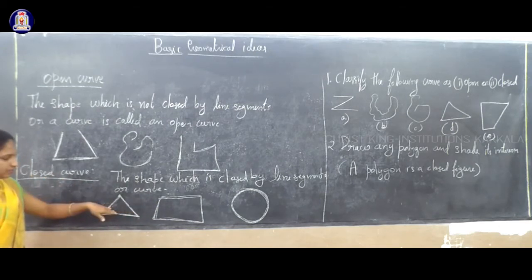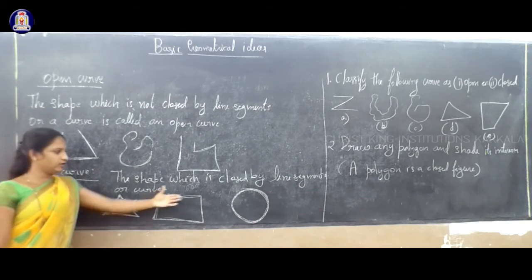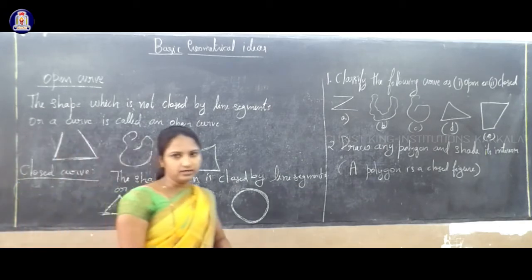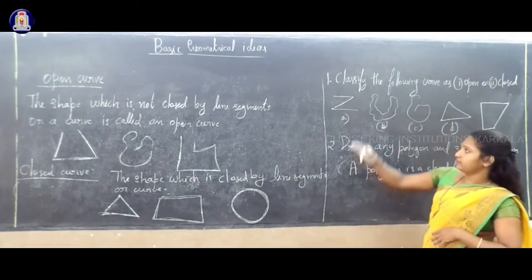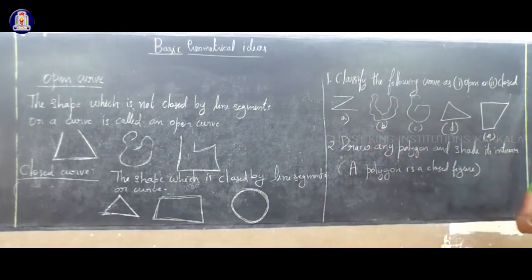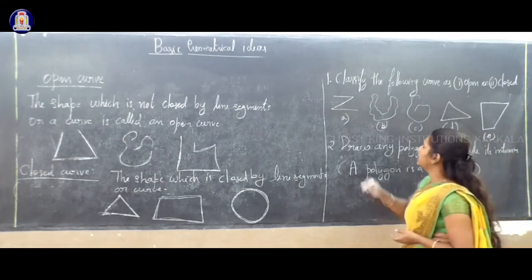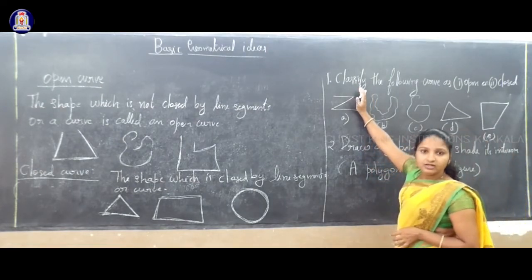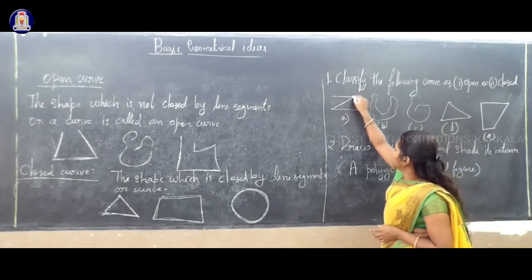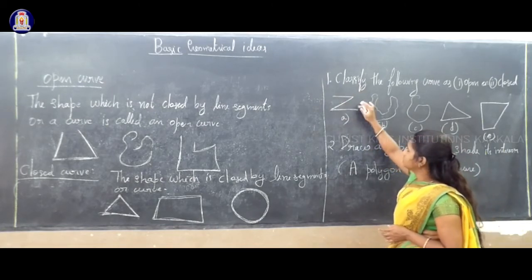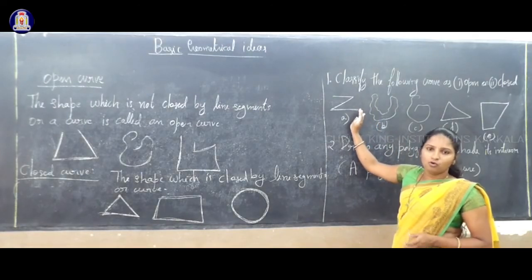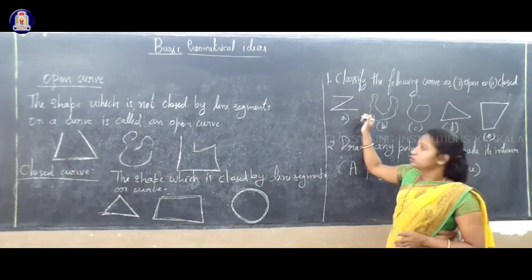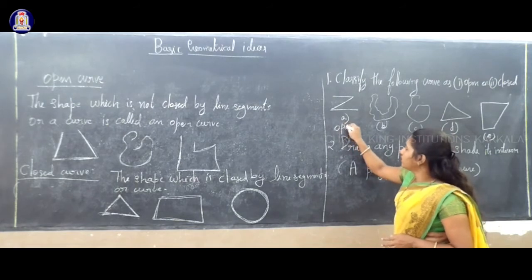Examples are written: some are closed figures and some are open figures. Now the question is to classify the following curves. Some figures are given — you have to classify them as open or closed curve. See the first figure — it looks like a Z.